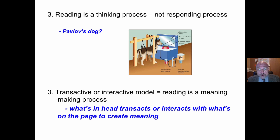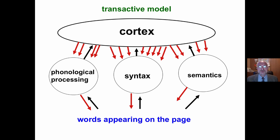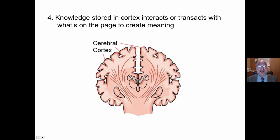The transactive or interactive model sees reading as a meaning-making process. What is in the head transacts with, or interacts with, what is on the page to create meaning — it is a two-way process. What is in the head, in the cortex — that is where we store information — interacts with what is on the page, and we use three cueing systems.